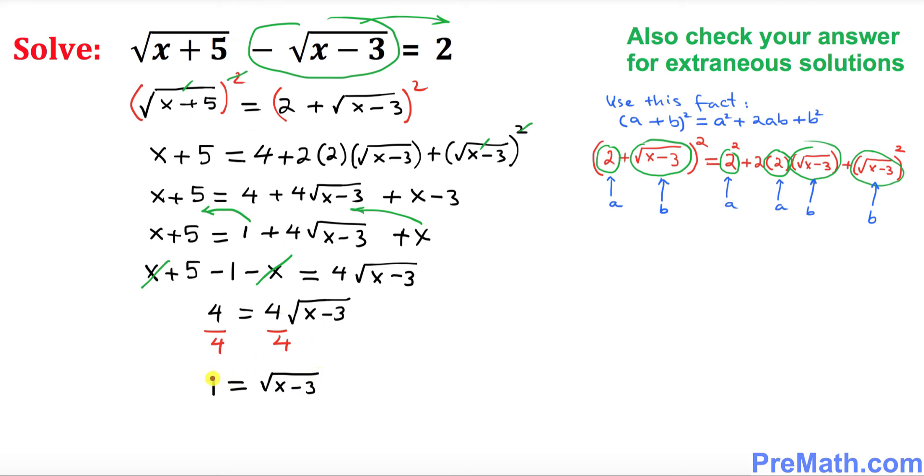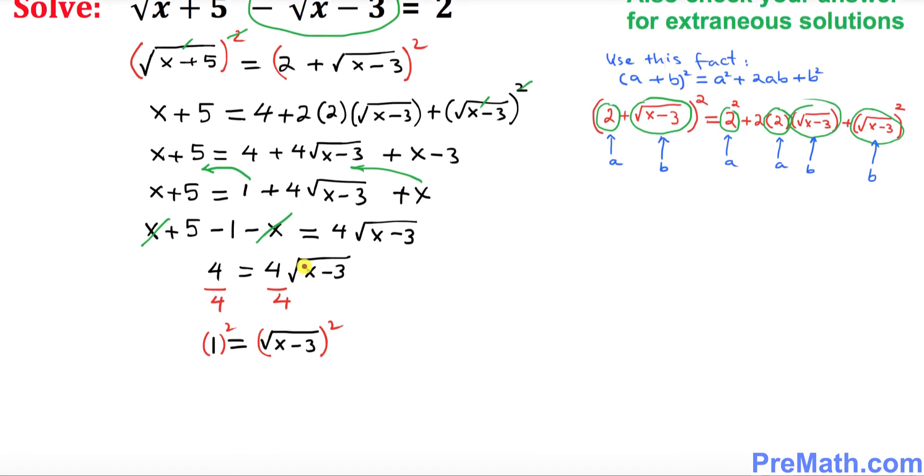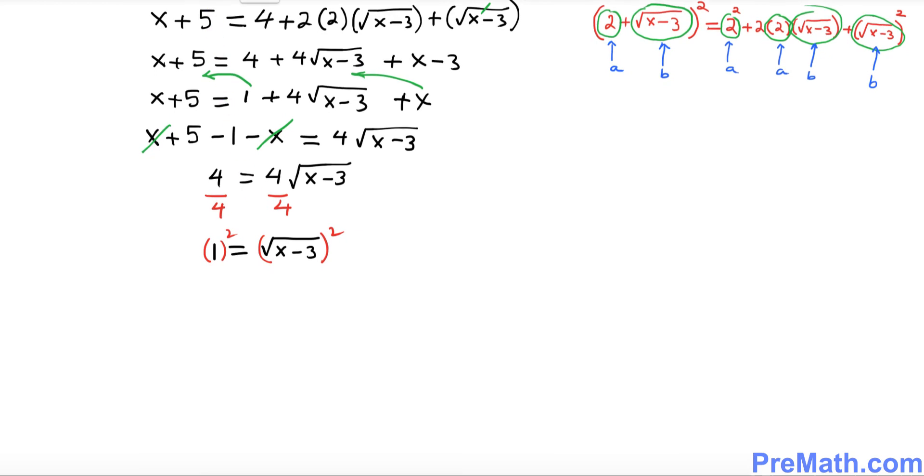The next thing what we want to do is we want to square both sides again. So what is going to happen is we know that 1 squared is simply 1 equal to once again this square and square root they undo each other we got x minus 3. Now I want you to move this negative 3 on the other side becomes positive 3 equals to x. So that means x equals to 4 is our solution.